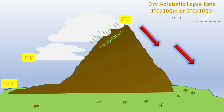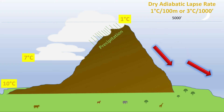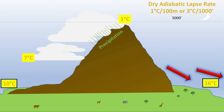As the cold, dry air descends on the leeward side of the mountain, it warms at the dry adiabatic lapse rate throughout the descent to the valley floor below, reaching much warmer temperatures than on the other side of the mountain.